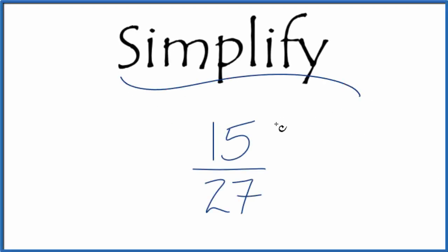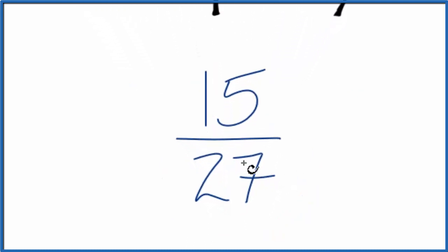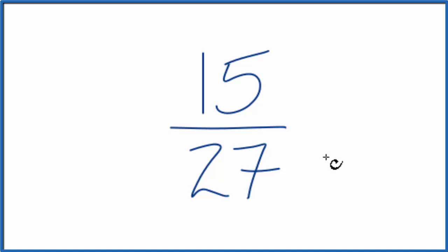All right, let's simplify the fraction 15 over 27. And here's how we do that. So we have 15 over 27, and we want to find another fraction that's equal, it's equivalent, has the same value, it's just that it's in lowest terms.